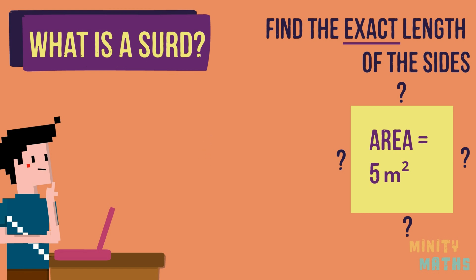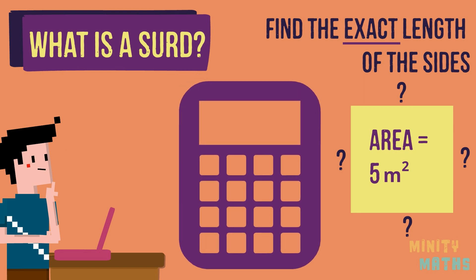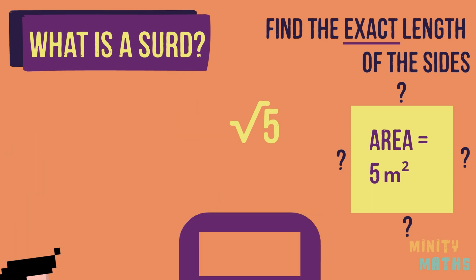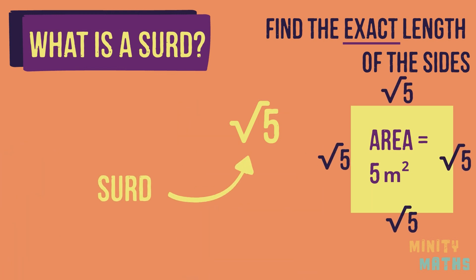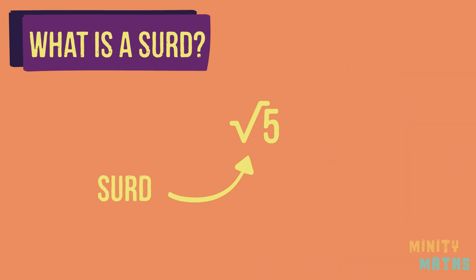You may have tried to work this out using a scientific calculator, in which case you will see the answer written as a root depending on your calculator settings. This is a surd. So the exact answer to this question is the square root of five. In fact, a surd is just an irrational number.